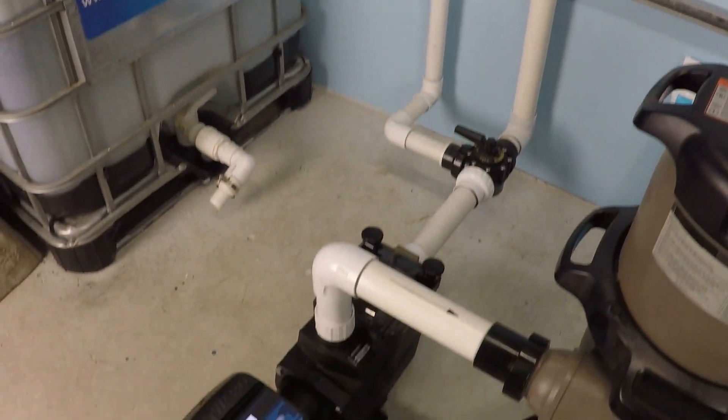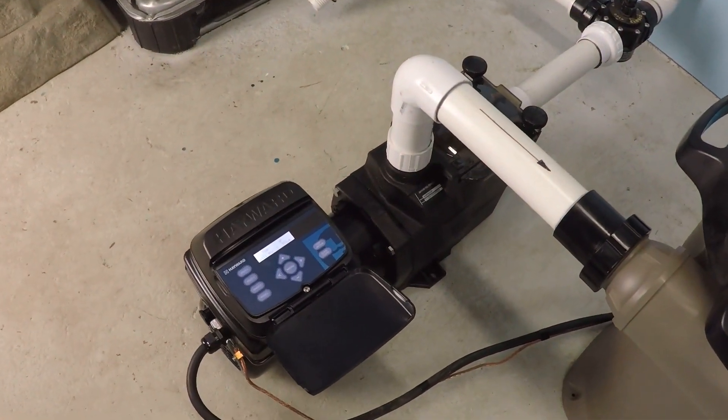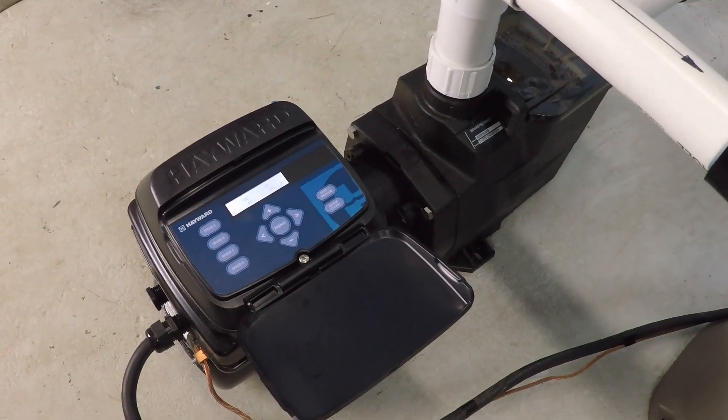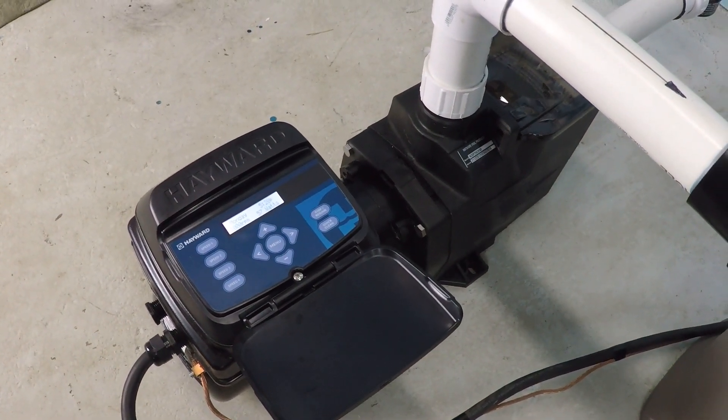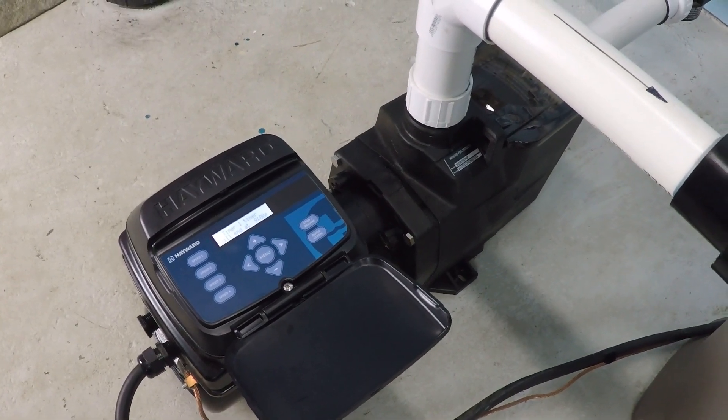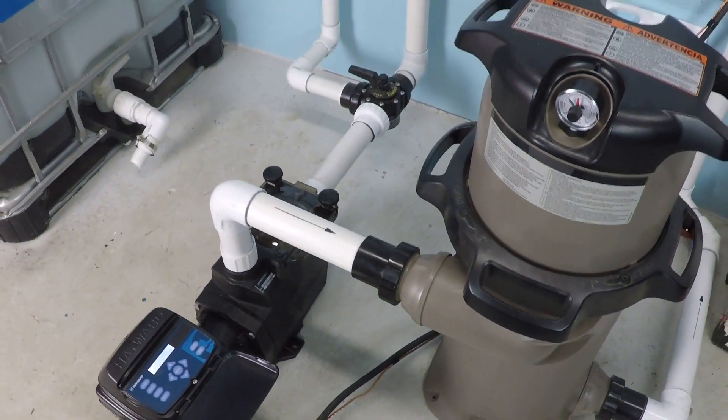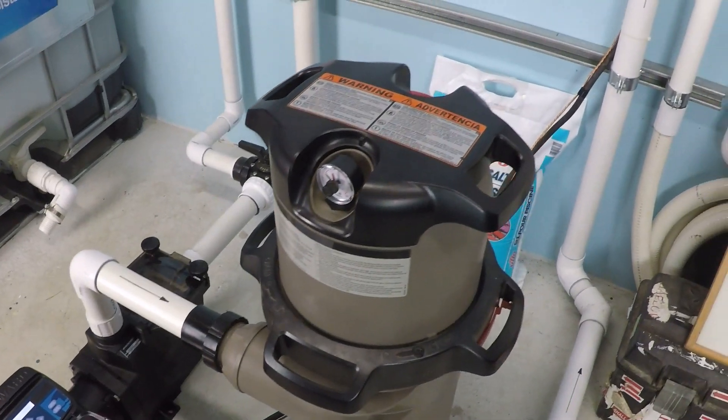The equipment for this setup is a one and a half horsepower Hayward super pump variable speed. This model is the SP2603 VSP with 230 volts and the filter that we're using is a 150 square foot filter.